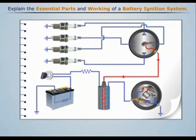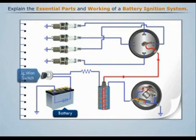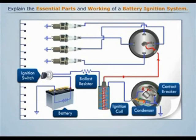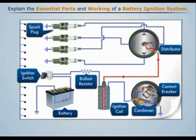The essential parts of the battery ignition system are: battery, ignition switch, ballast resistor, ignition coil, contact breaker, condenser, distributor, and spark plug.